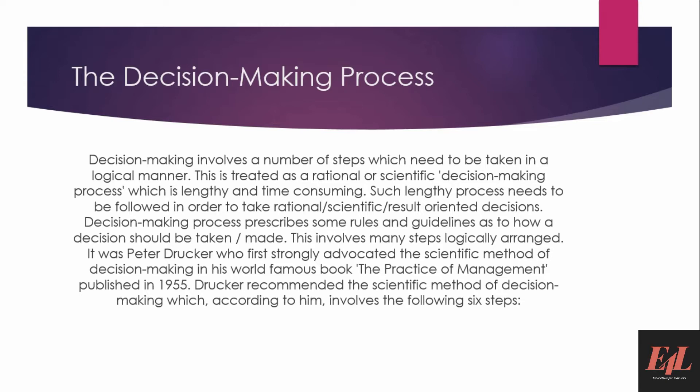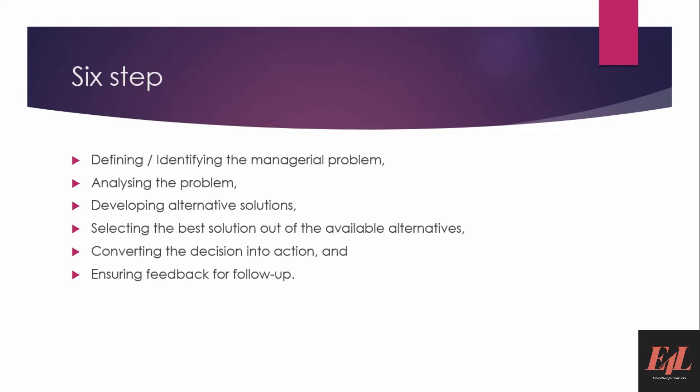It was Peter Drucker who first strongly advocated the scientific method of decision making in his world-famous book, The Practice of Management, published in 1955. He recommended the scientific method, which involved the following six steps: defining and identifying the managerial problem, analyzing the problem, developing alternative solutions, selecting the best solution out of the available alternatives, converting the decision into actions, and ensuring feedback for follow-up.